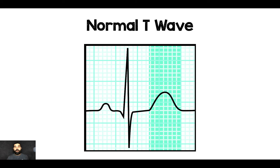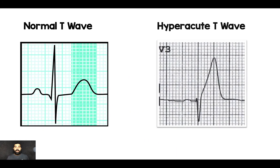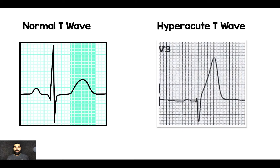Now let's look at a normal T wave — this is all about proportionality. You can see the T wave is relatively small and very symmetric compared to the QRS; this is what normal T wave morphology looks like. If I zoom in on V3 from that previous EKG, you can see how much bigger that T wave is — broad-based and hyperacute, very tall. It's usually bigger than the QRS, and the way I make this distinction is: if you can fit the QRS inside the T wave, that's concerning for hyperacute T waves.